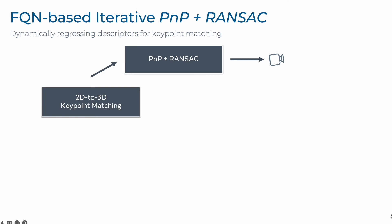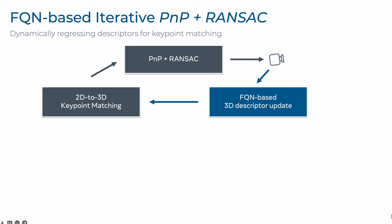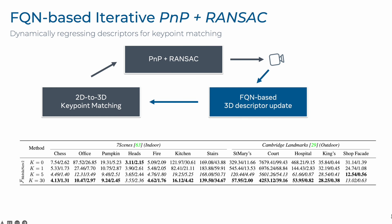Another example of FQNs being used for absolute camera pose estimation is this iterative PNP formulation. Given a feature extractor, one can compute image-based 2D-to-3D keypoint correspondences and solve for the camera pose using a PNP solver inside a RANSAC loop. From this initial estimate, we can go further and close the loop by updating the 3D descriptors and performing the 2D-to-3D keypoint matching step again, this time with descriptors that are better aligned with the query image. Our quantitative results demonstrate strong relative improvements compared to standard PNP plus RANSAC for the same set of features, especially when dealing with large camera baselines that initially provide many erroneous correspondences.